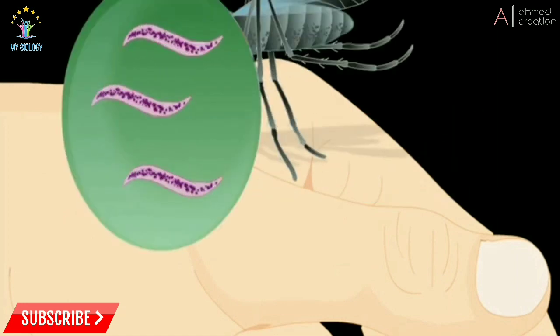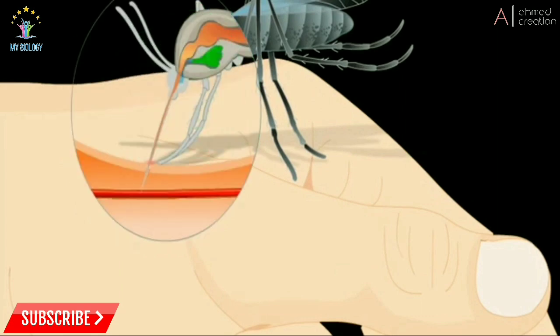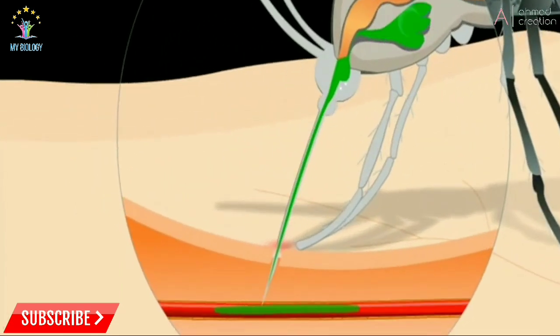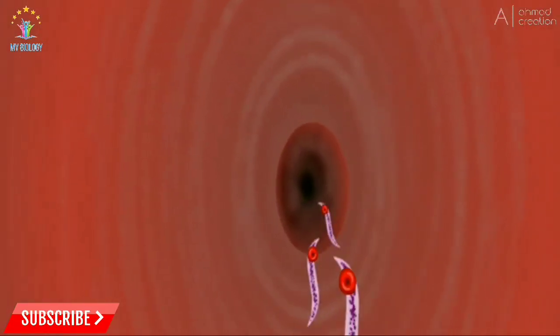called Microfilariae, are injected into the blood of man along with the saliva of Culex and Aedes mosquitoes.